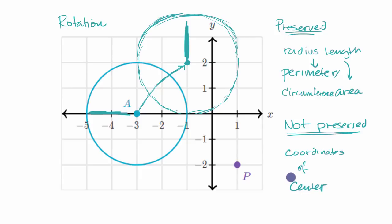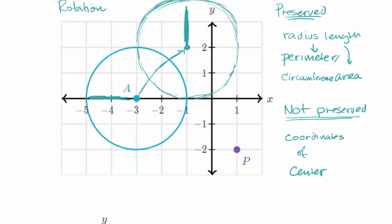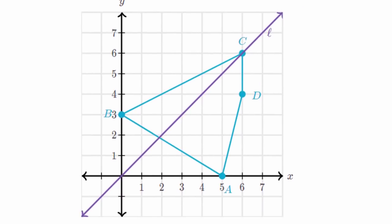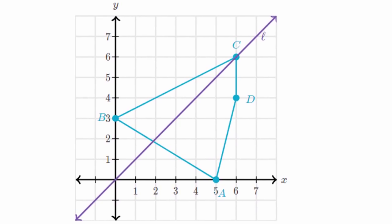Let's do another example with a non-circular shape and a different type of transformation. In this situation, let's do a reflection. We have a quadrilateral here — quadrilateral A, B, C, D — and we want to think about what is preserved or not preserved as we do a reflection across the line L. We can even think about this without doing the reflection ourselves, but let's just do the reflection quickly.